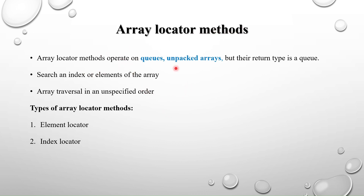So what are array locator methods? Array locator methods operate on queues and unpacked arrays, and the return type is a queue. In array locator methods it will not return a single value — it will return multiple elements. So we need to store them, and for that we need a queue. So the return type is a queue.